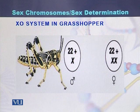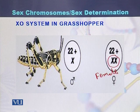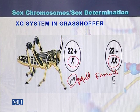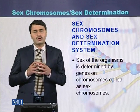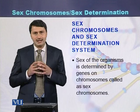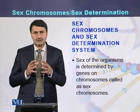In the grasshopper sex determination system, if there are two X chromosomes the grasshopper will be female, and if there is a single X chromosome in addition to autosomes then a male will be produced. In conclusion, sex chromosomes carry the genes responsible for sex determination in animals. Animals have both autosomes and sex chromosomes, and the combination of sex chromosomes determines the sex of the individual.